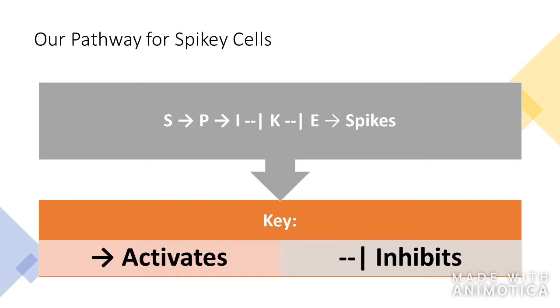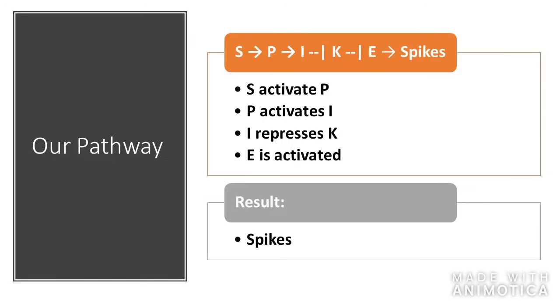So here we have our pathway that leads to spiky cells in the ectoderm. Below is the key that we will use, where the arrow indicates that the previous gene is activating it, and the t-bar is inhibiting the gene following it.